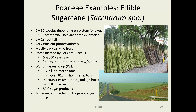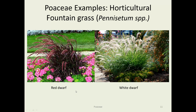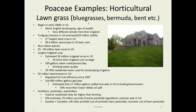Sugarcane was first domesticated 6,000 to 8,000 years ago. The Greeks called them 'reeds that produce honey without bees.' For horticultural examples of the Poaceae, there are quite a few grasses used for landscaping. The Pennisetum is a very popular one — it's not native to the U.S. Two examples are creatively called red dwarf and white dwarf. Lawn grass is the biggest use of horticultural species of Poaceae, with many different species including bluegrasses, bermudagrass, and bentgrass — over 60 different species are used.